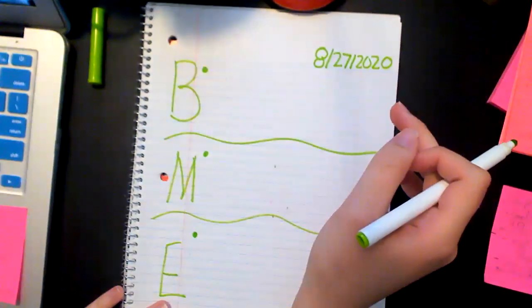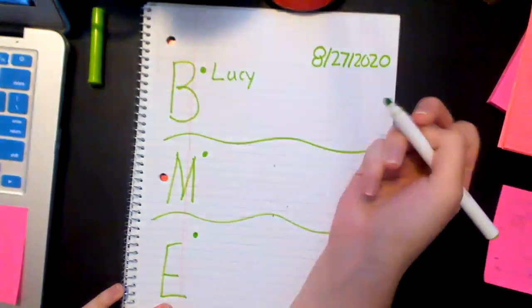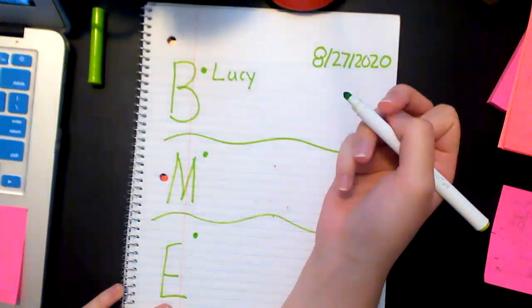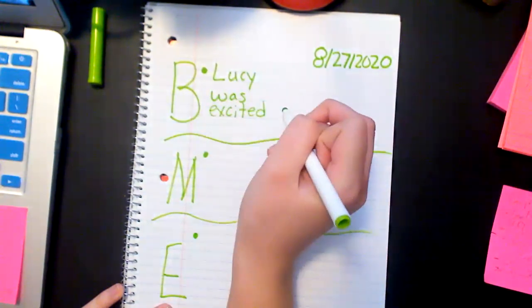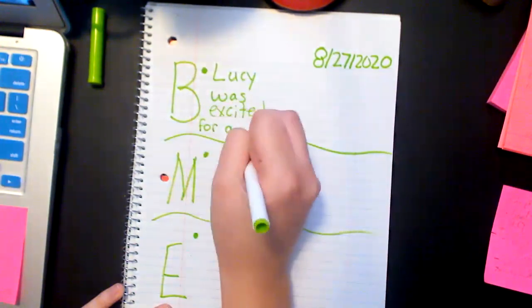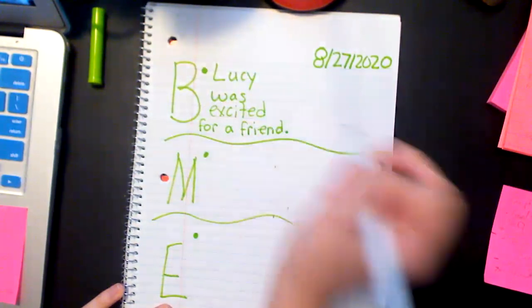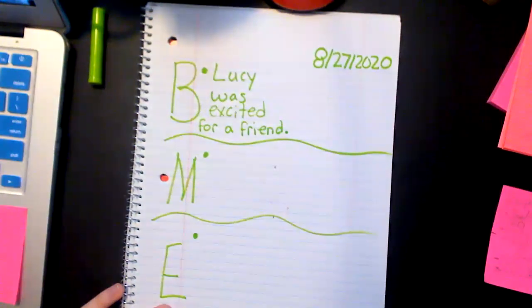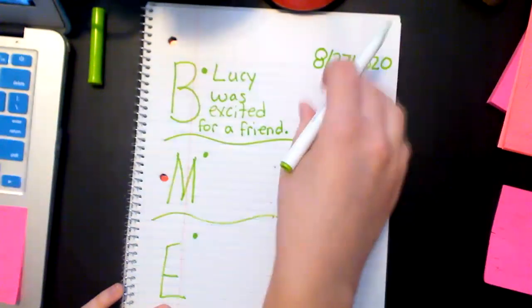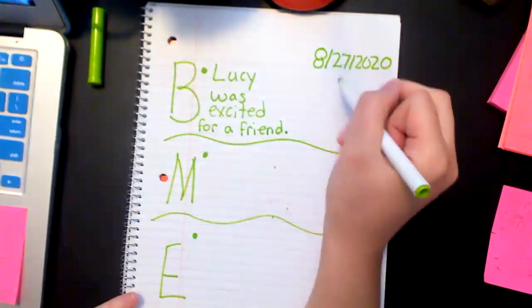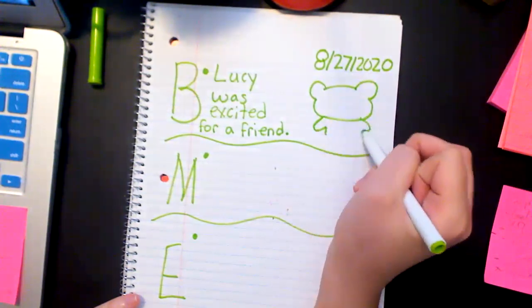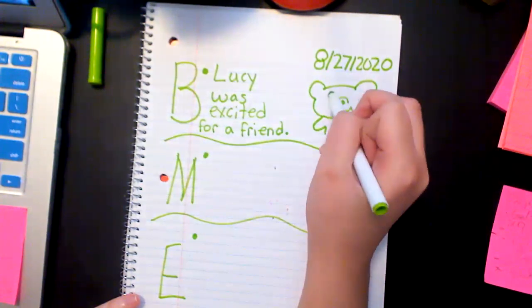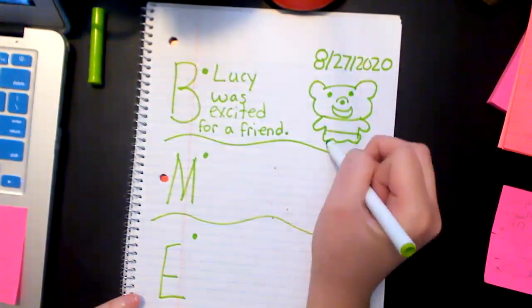For the beginning, what we put was 'Lucy was excited for a friend,' because the whole beginning of the story, Lucy kept saying how much she wanted to make friends and she had all these ideas and all these plans. So: Lucy was excited for a friend. Please put a period at the end. That was the first part that happened in the beginning. And then we drew a picture of Lucy being very, very excited on the side.